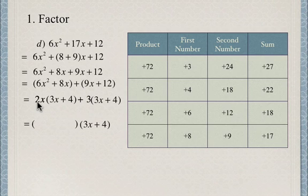From the first term, we bring down 2x, which is what's left after factoring out (3x + 4). From the second term, we're left with +3 after factoring out (3x + 4).